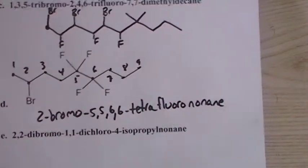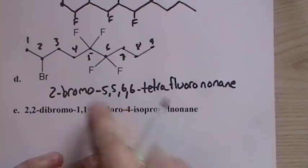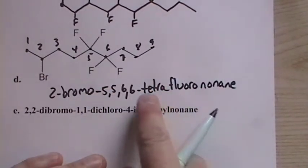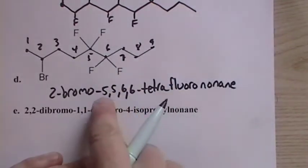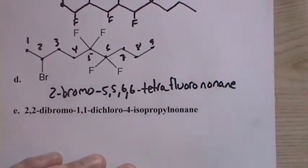Fluorononane. And let me just, because of that, it kind of caught me off guard. Let me just make sure. We have nine carbons, we have four fluorines, so tetrafluoro. We have that five, five, six, six, two bromo. Yep, everything's there, good.